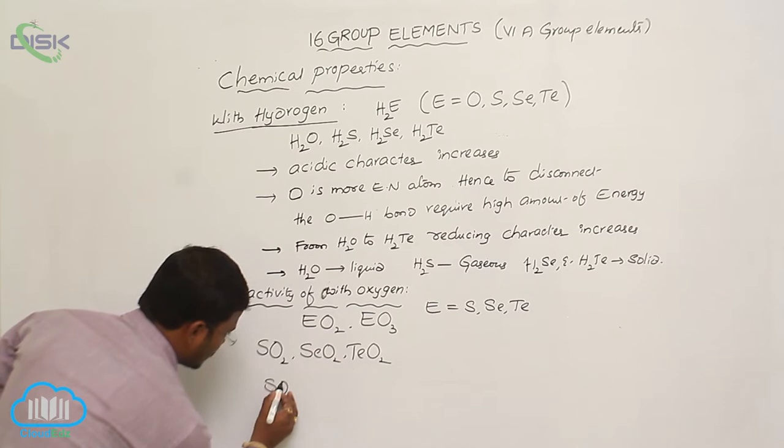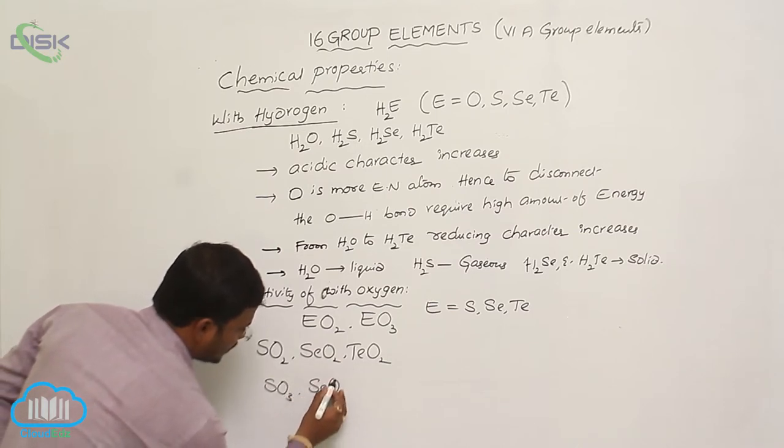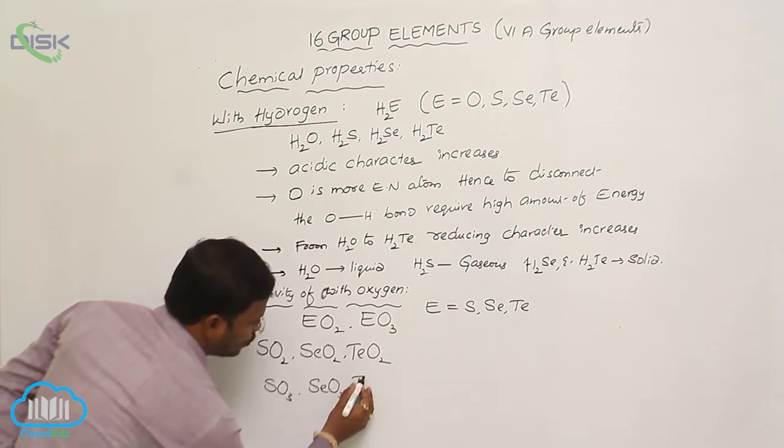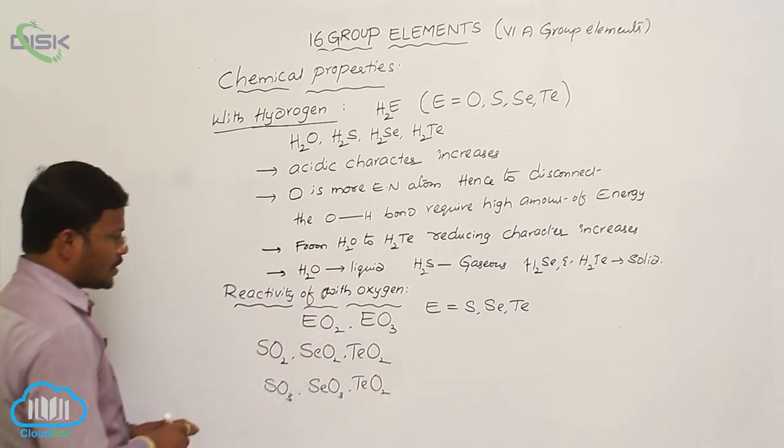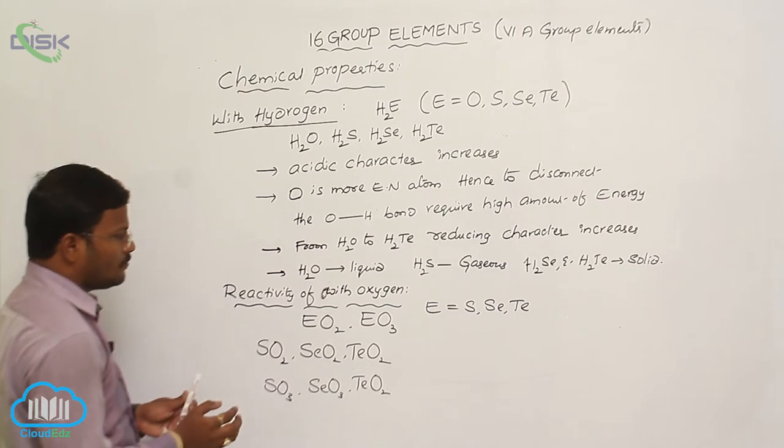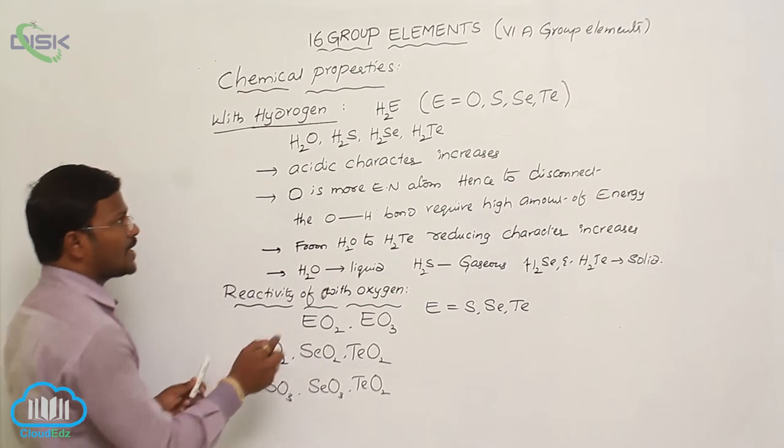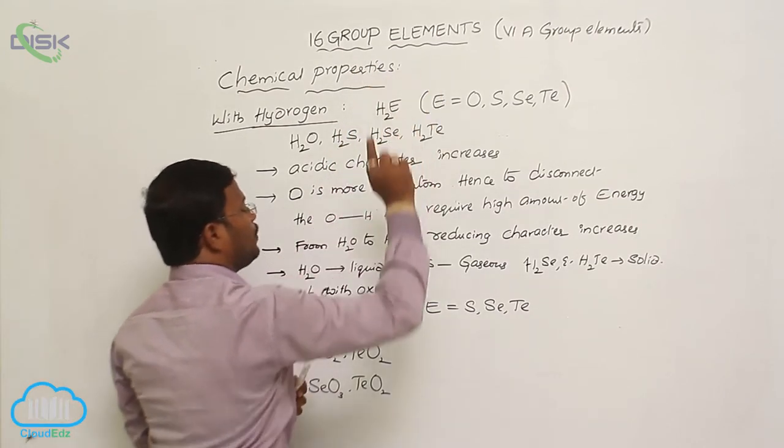Sulfur trioxide, selenium trioxide, and tellurium trioxides. These are the oxides resulting from oxygen by reacting with 16th group elements.